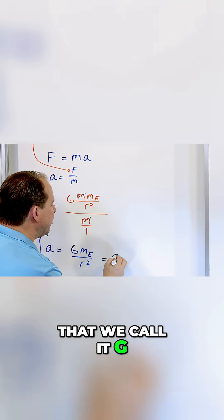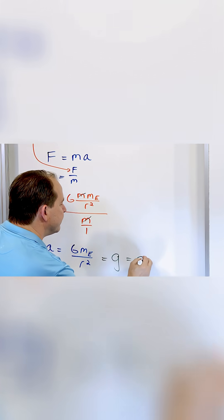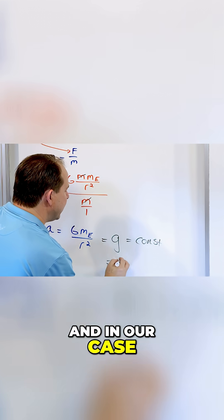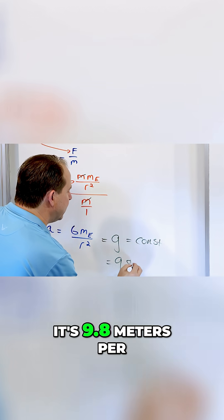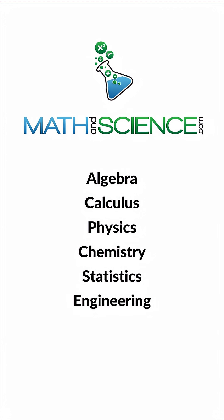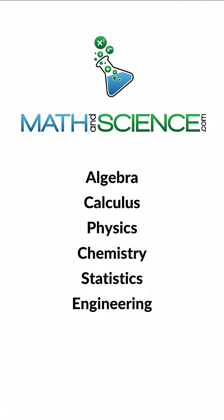And so that means that we call it g, which is a constant, and in our case on Earth at the surface, 9.8 meters per second squared. Learn anything at mathandscience.com.